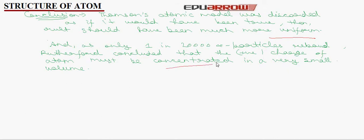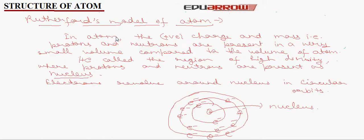Now let us discuss Rutherford's model of atom. Rutherford said that in atom, the positive charge and mass, the protons and neutrons, are present in a very small volume compared to the volume of atom. He called the region of high density where protons and neutrons are present the nucleus. He said that electrons revolve around nucleus in circular orbits.